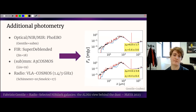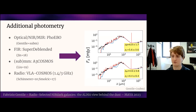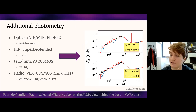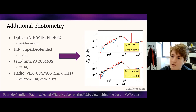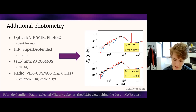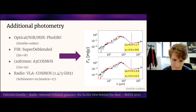Thanks to this algorithm, I was able to extract photometry in the optical, near-infrared, and mid-infrared, and then cross-matched with catalogs in the far-infrared, sub-millimeter, and radio. This allowed me to reconstruct the spectral energy distribution of my sources from the optical to the radio. I then used this photometric catalog for SED fitting performed with two different algorithms, MAGPHYS and CIGALE, to estimate photometric redshifts and physical properties.